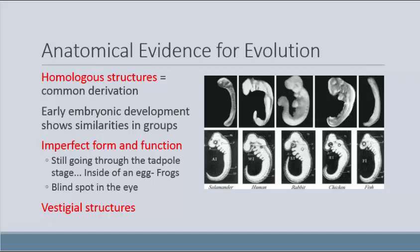Another example of anatomical evidence is imperfect form and function. It sounds odd to say that something not being right is good data, but most creatures are still going through ancestral stages. When we create a creature through natural selection, we're never building something brand new — we're always working on the old. Therefore we retain old characteristics: certain frogs still go through a tadpole stage inside the egg even though that's not how they're eventually born. The human eye has a blind spot because of how the nerve cord attaches to the retina — not preferable, but it's because our eye was built off an earlier version.